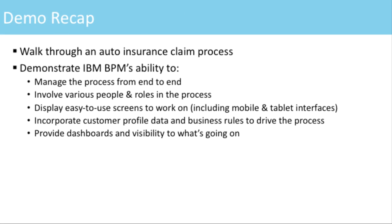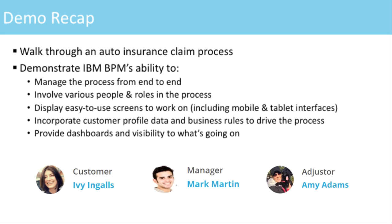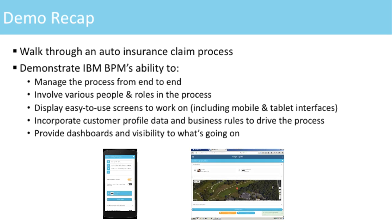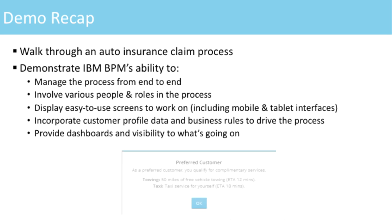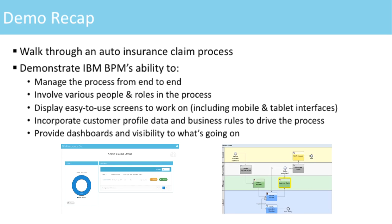Let's recap what I just showed you. We went through an instance of the auto insurance claim process, all done in IBM BPM. BPM managed the process from end-to-end, from the initial accident report all the way to delivering the final result. It involved multiple people and roles, including Ivy, Mark, and Amy. We showed easy-to-use screens for people to work on. The process used business rules and made offers based on Ivy's preferred customer status. And finally, BPM provided dashboards and visibility to what's going on at every step.